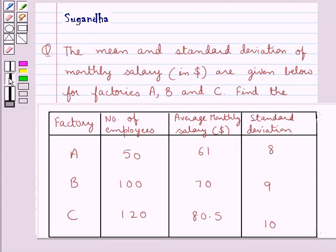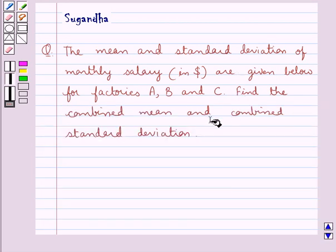Hello and welcome to the session. In this session we discuss the following question: the mean and standard deviation of monthly salary in dollars are given below for factories A, B and C. Find the combined mean and combined standard deviation.